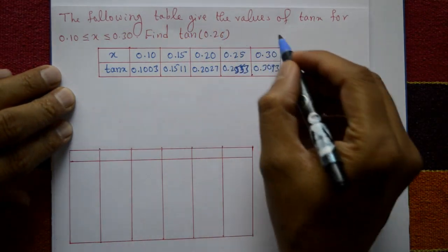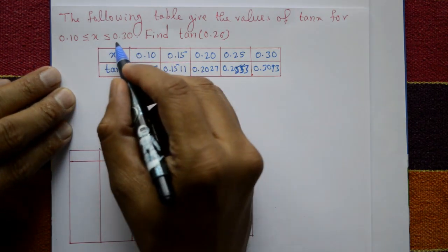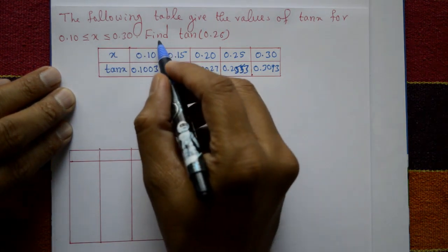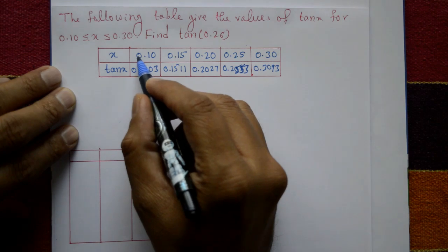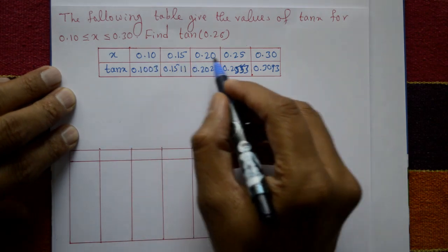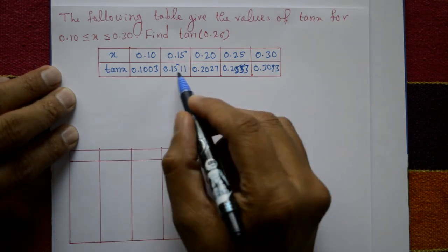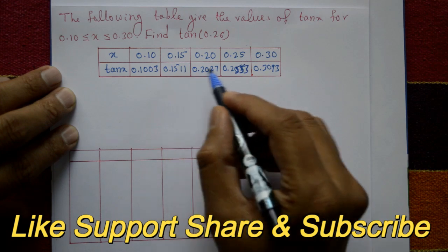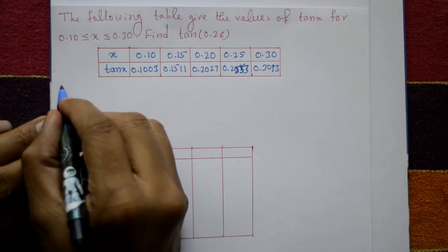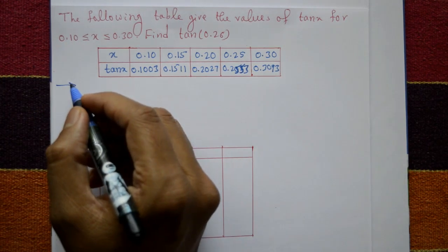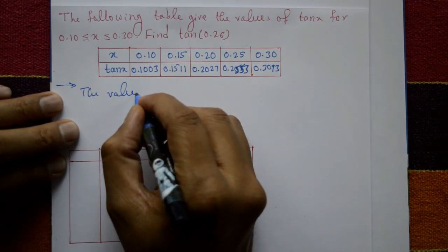The following table gives the values of tan(x) for 0.10 ≤ x ≤ 0.30. Find tan(0.26). The x values given are 0.10, 0.15, 0.20, 0.25, 0.30, and the corresponding tan(x) values are 0.1003, 0.1511, 0.2027, 0.2553, and 0.3093.